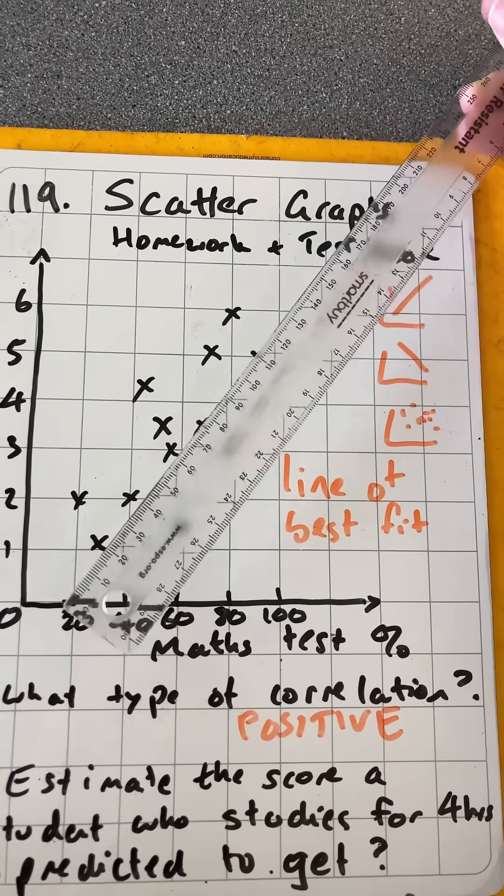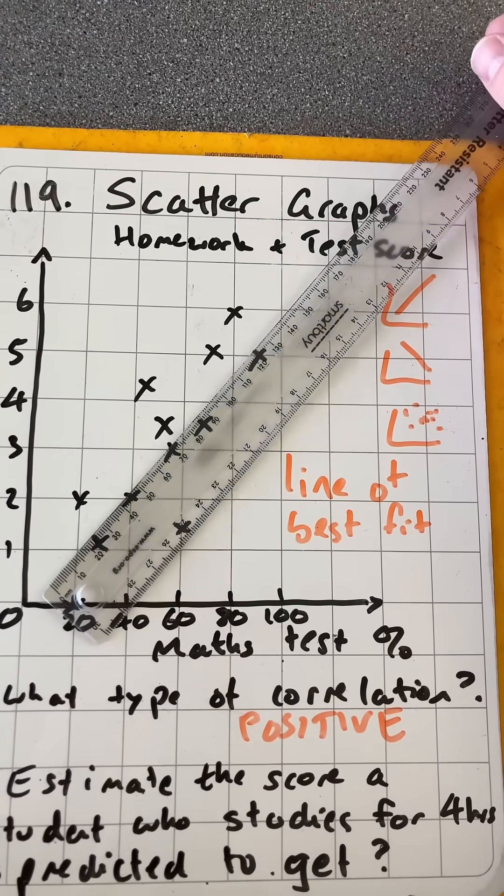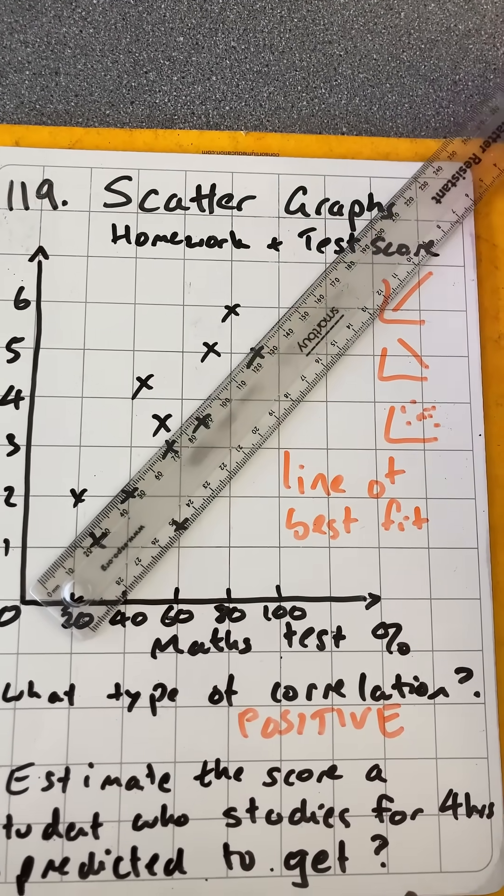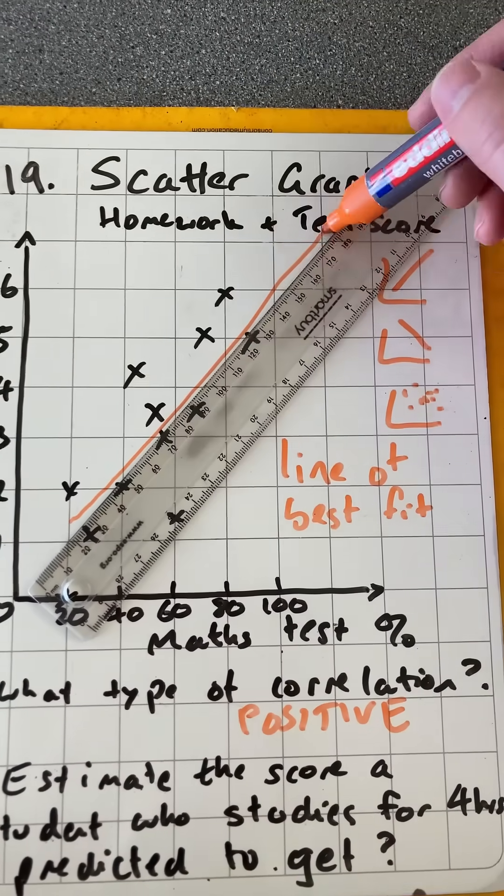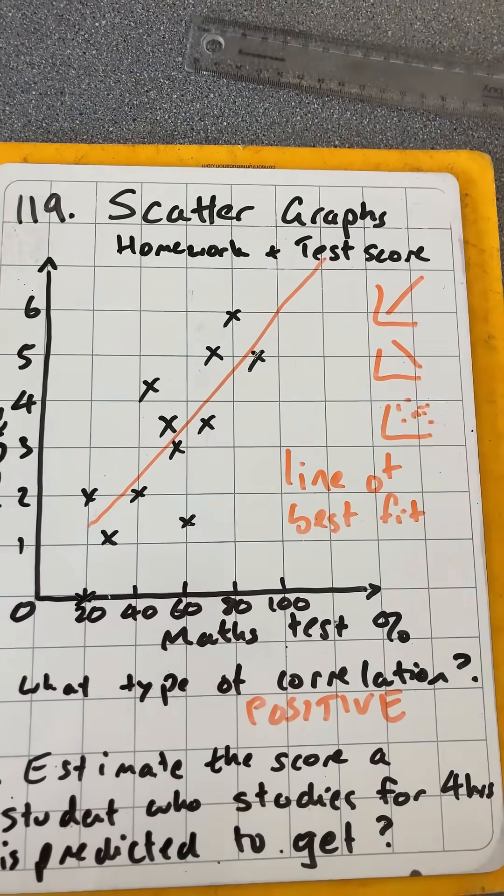So there are 12 data points, so we kind of want to get six either side with something around about that and have a line of best fit.